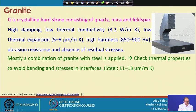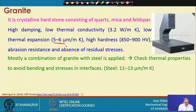Granite can also be combined with steel or other materials. In that case, you must check the thermal properties to avoid bending and stresses at the interface. Steel has a coefficient of thermal expansion of 11 to 13 µm/m·K, while granite has only 5 to 6 µm/m·K.